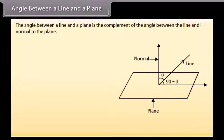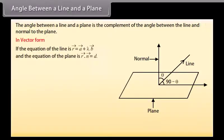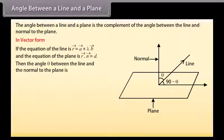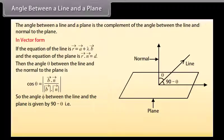Angle between a line and a plane. The angle between a line and a plane is the complement of the angle between the line and the normal to the plane. In vector form, if the equation of the line is vector R equals vector A plus lambda vector B and the equation of the plane is vector R dot vector N equals D, then the angle theta between the line and the normal to the plane is cos theta. So the angle phi between the line and the plane is given by 90 minus theta, that is sin phi equals cos theta.